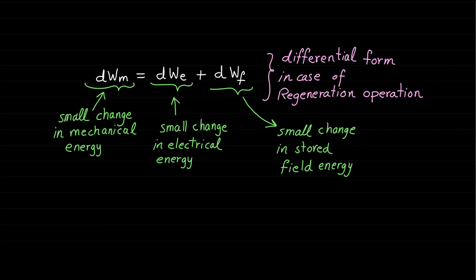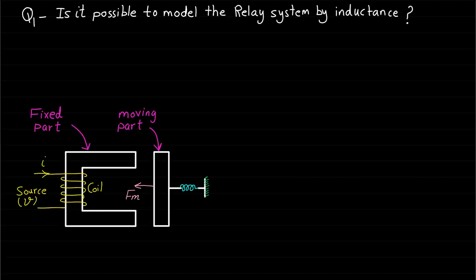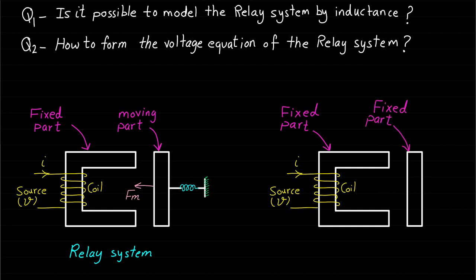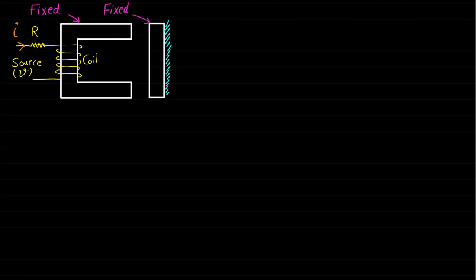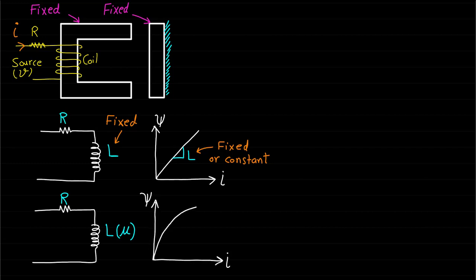Before ending this lecture, let's address two questions: is it possible to model the relay electromechanical system by an inductance L, and how to form the voltage equation of such a magnetic circuit? To answer these, let's compare the relay system with a similar magnetic circuit where all parts are fixed. When all parts are fixed, the magnetic circuit can be represented by a constant inductance L if we assume it is a linear magnetic system, or by an inductance function of permeability L(mu) if the magnetic circuit is a nonlinear magnetic system.